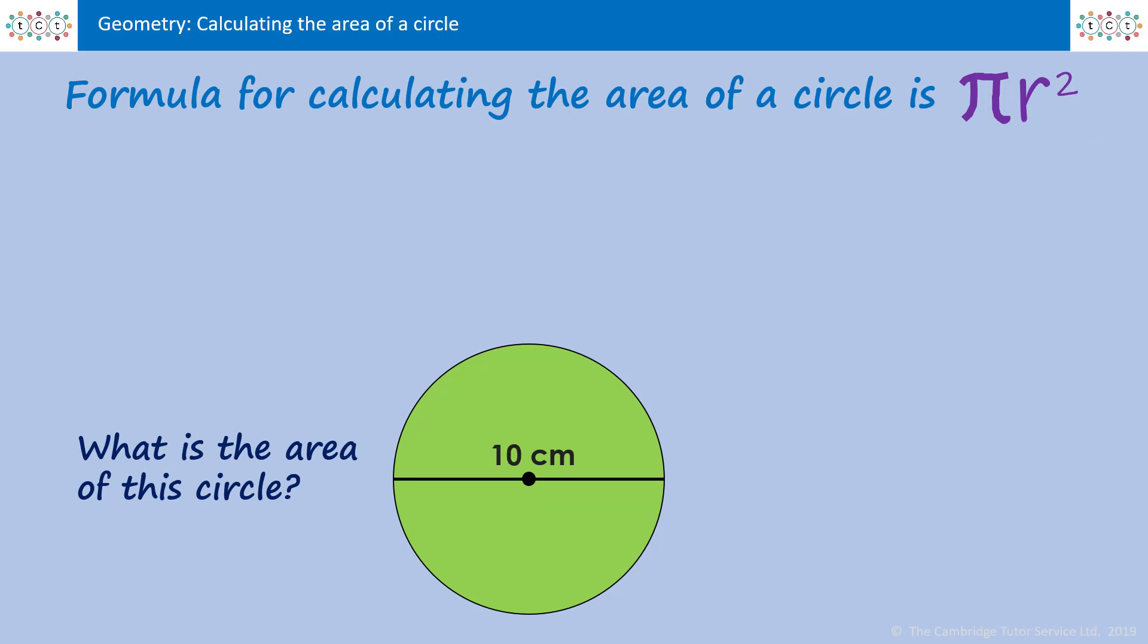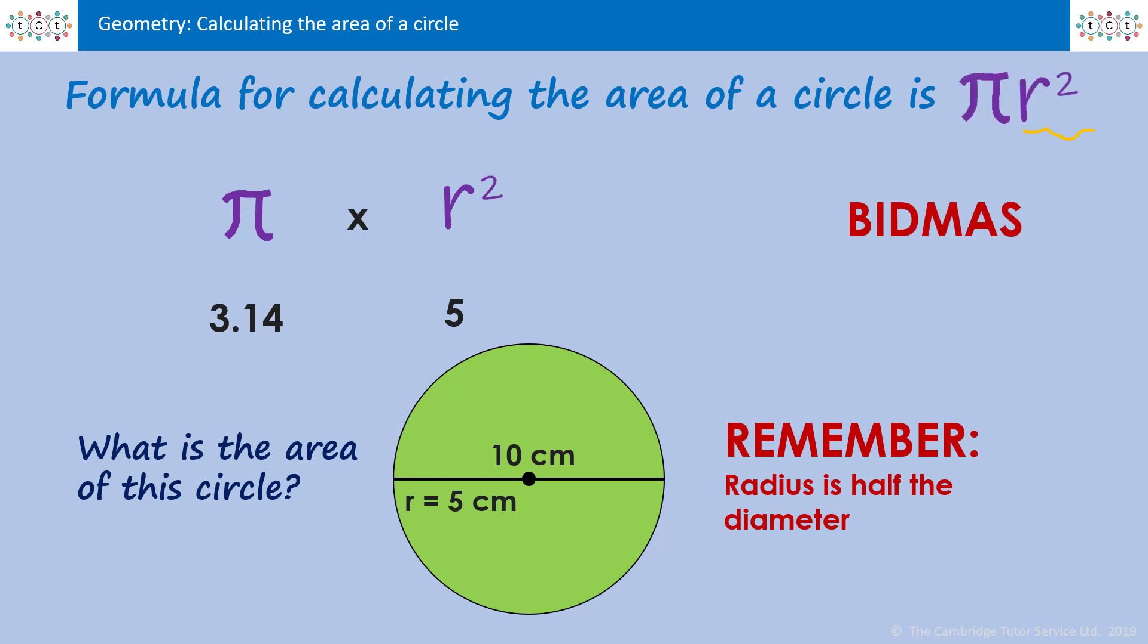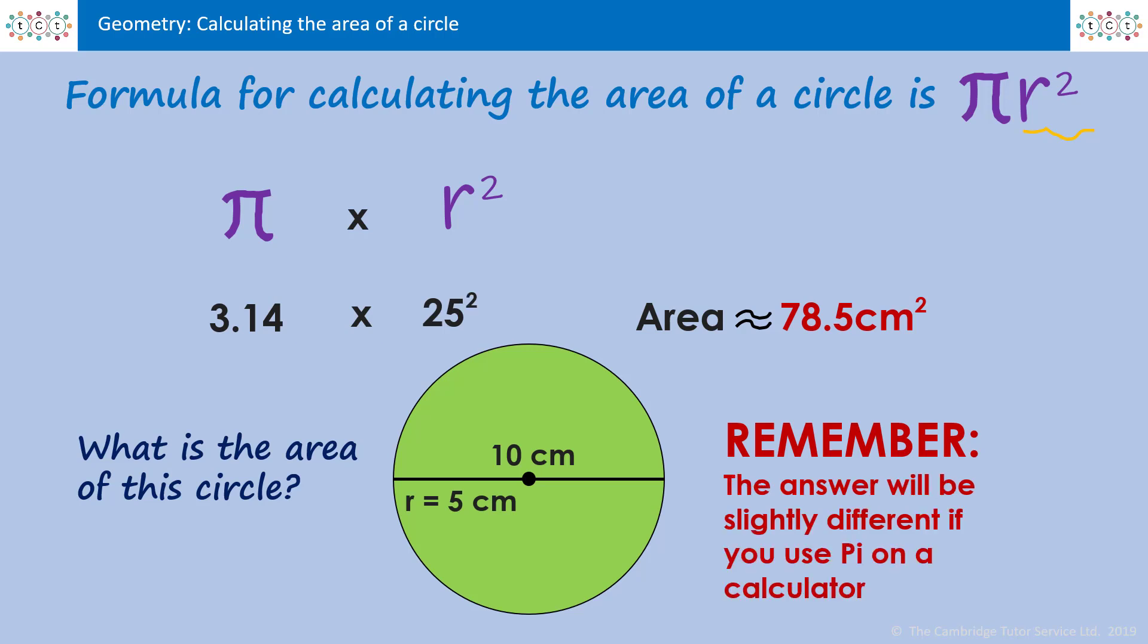Here's one for you to have a go at. This circle has a diameter of 10 centimeters, calculate the area. Pause the video and have a go. Remember you have to work with the radius and that's half the diameter. Half of 10 is 5, so the r we're working with is 5 centimeters. Pi which is 3.14, and we're going to square the radius. The radius is 5, 5 squared is 25. 3.14 times by 25. The area of this circle is approximately 78.5 centimeters squared. And remember if you were doing this on a scientific calculator the answer will be slightly different.